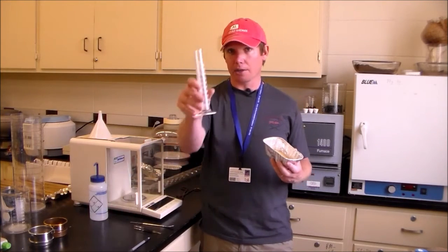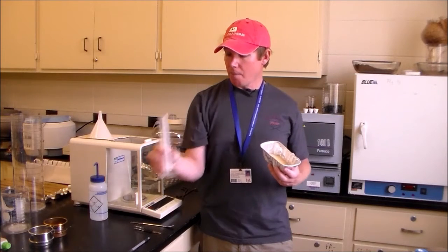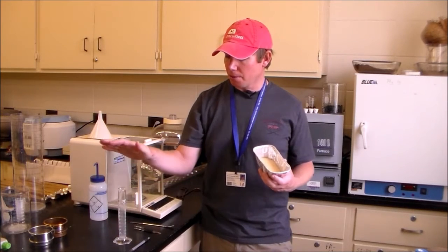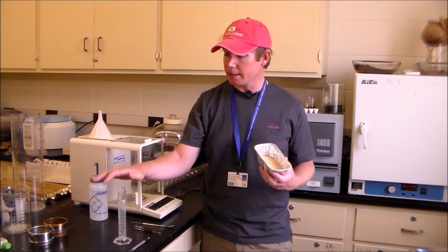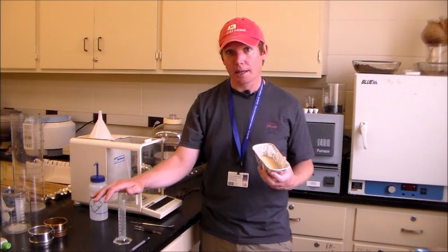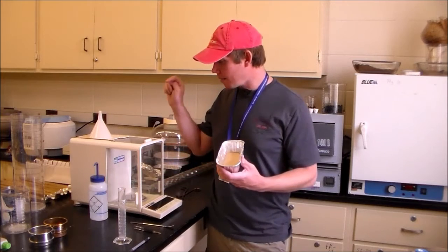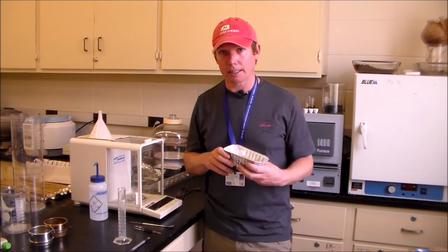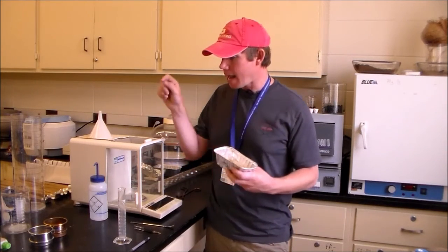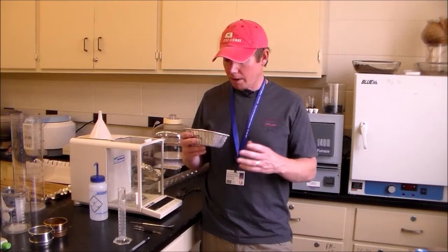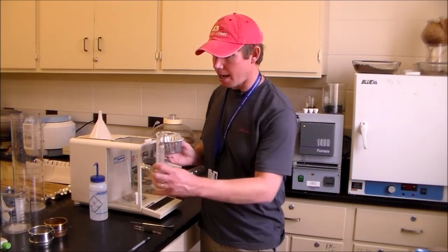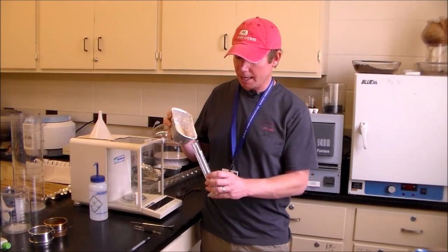So I'm going to use a graduated cylinder. And what I'm going to do is measure out 10 cubic centimeters of sediment here. And then I'm going to determine the mass of that 10 cubic centimeters, and I'll divide the mass by the volume, essentially divide the mass by 10, and I've got a dry bulk density. So very quickly, let me go ahead and measure out 10 cubic centimeters of sediment.